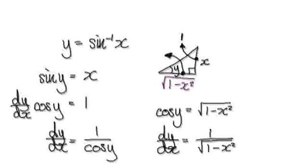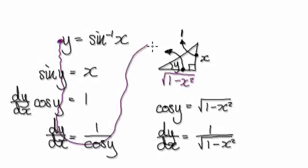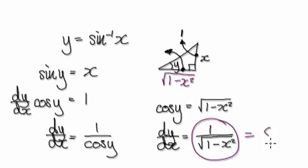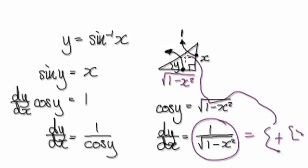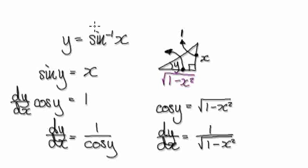In this video, we're going to come up with a Maclaurin series for inverse sine of x. The idea is to differentiate inverse sine of x to get its derivative, turn that derivative into a series, and then integrate the series. That will then give us the Maclaurin series for arcsin(x).